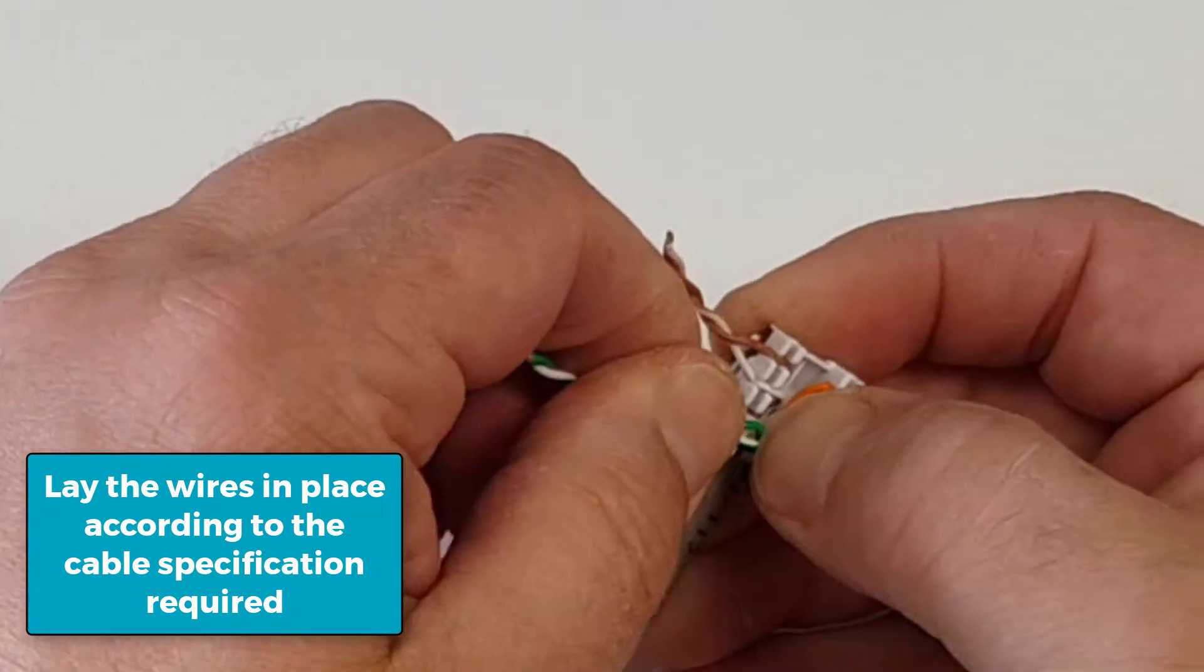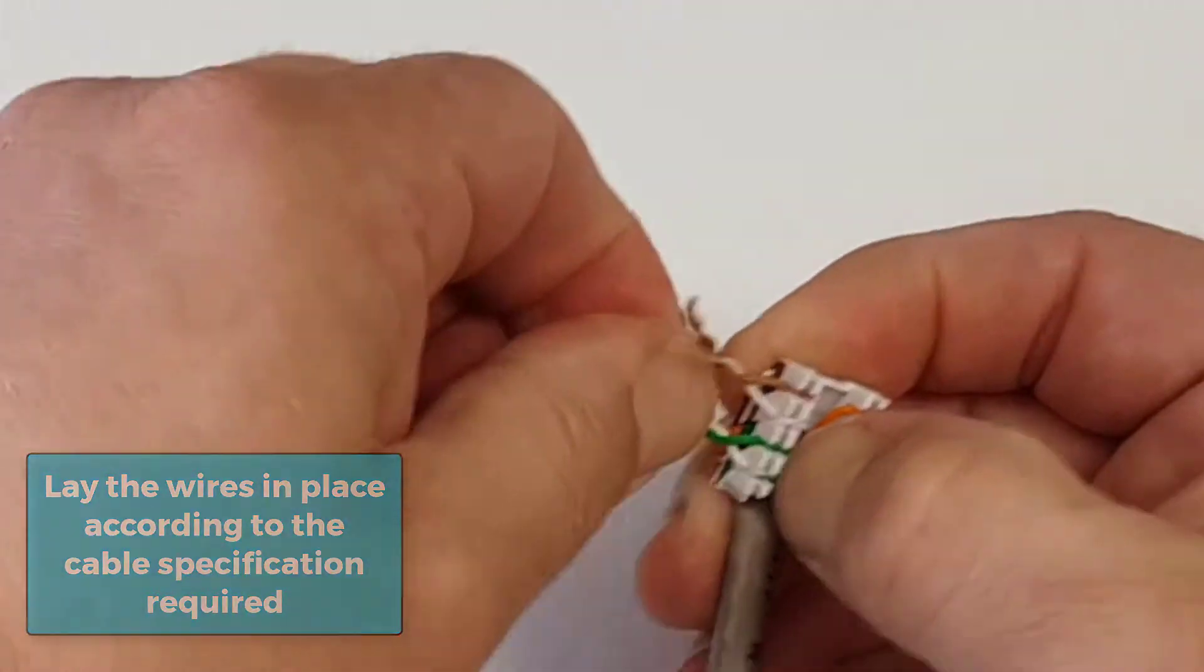And then on this side we have got green that is forward and white green at the back. Just lay those wires so that they sit in place and put it down like that.